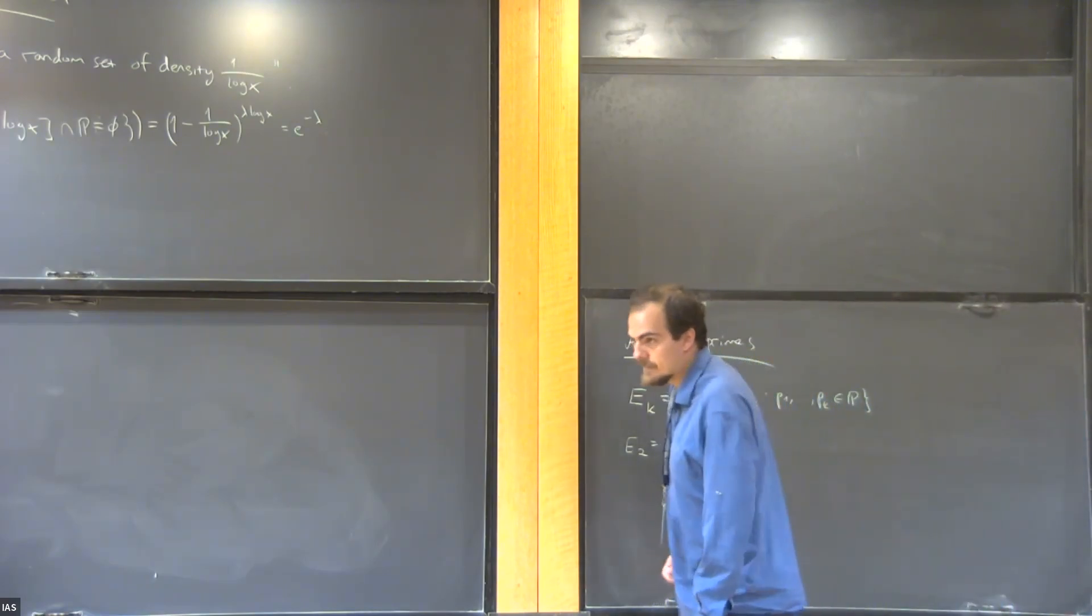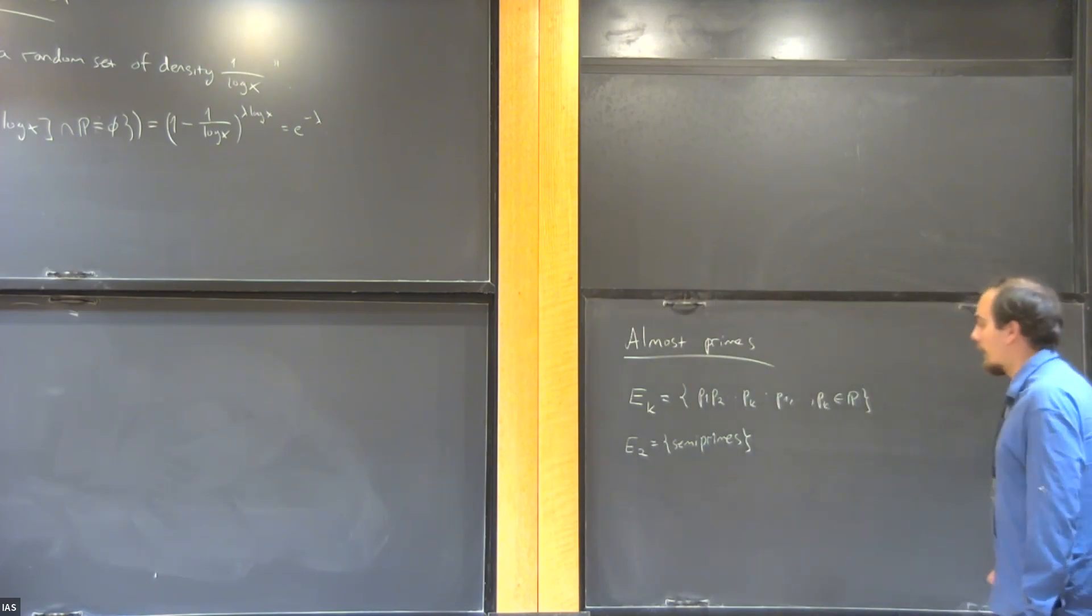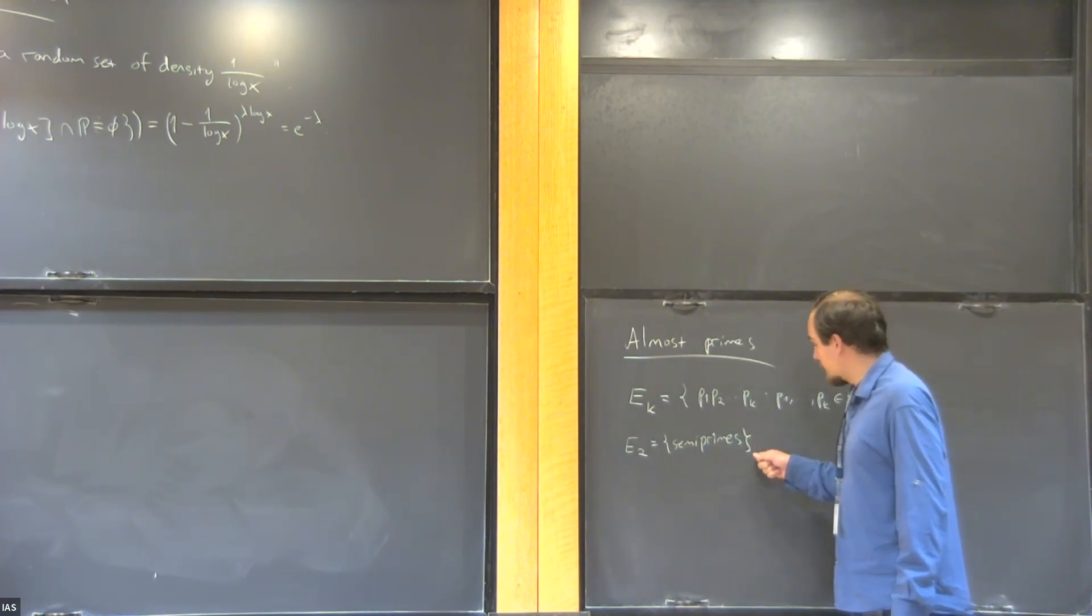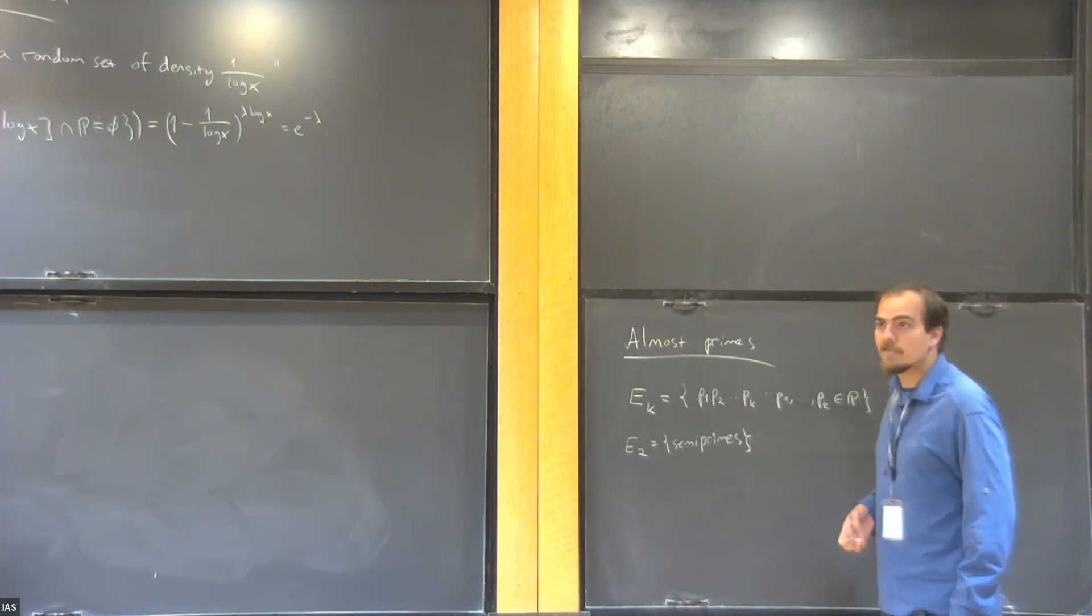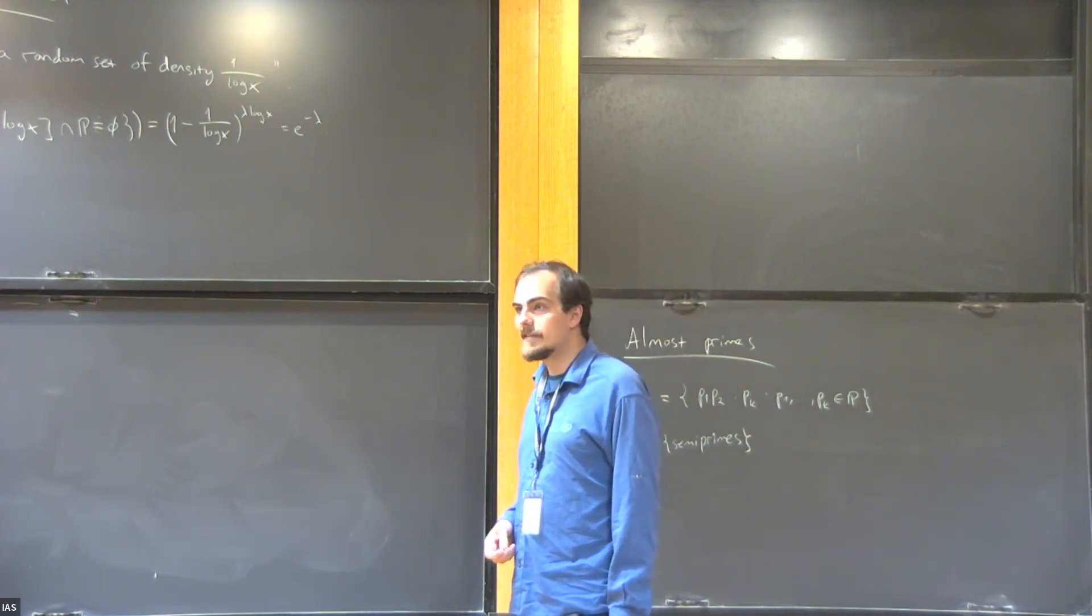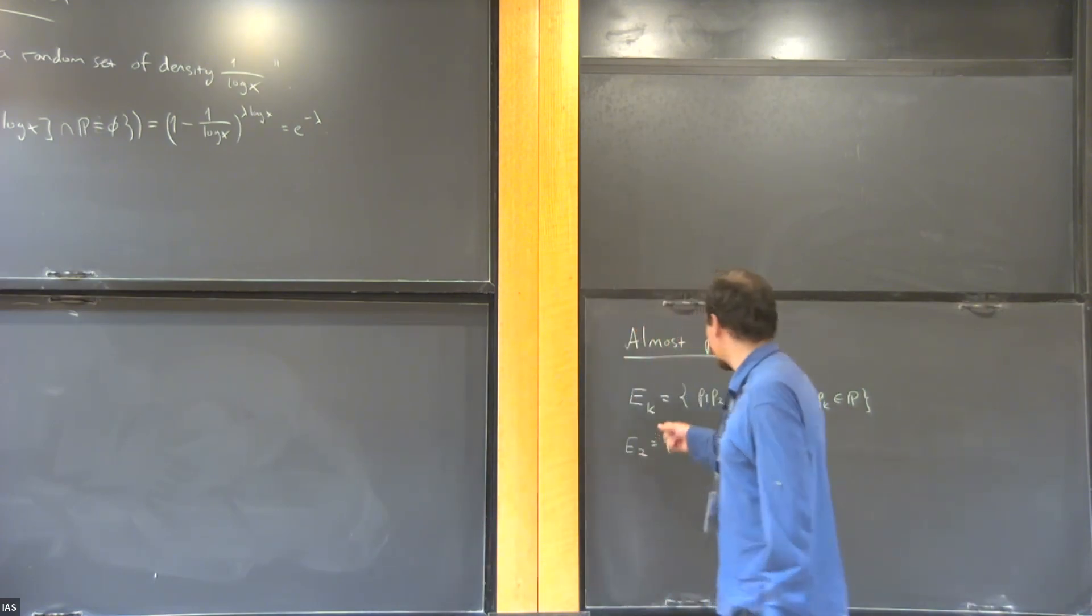With repetition, yeah. E_2 is not a prime, is it allowed? Right. You really want exactly k prime factors. That's where the E is. Otherwise it would be easier if you allowed both primes and semi-primes together.